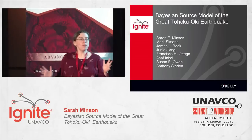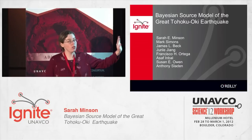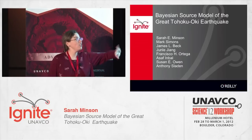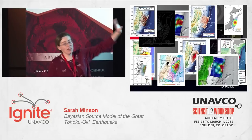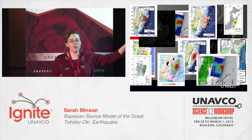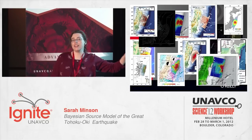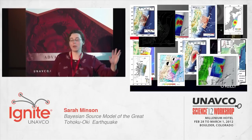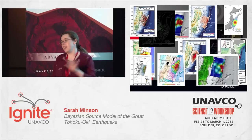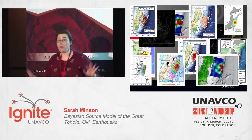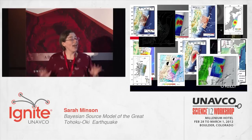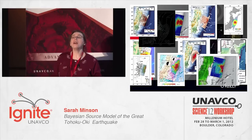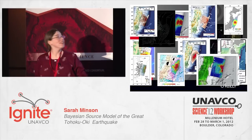There have already been a whole lot of slip models published for the Tohoku earthquake, and as you can see, they're all a little different. That's because this is a fundamentally underdetermined inverse problem — there is more than one model which fits the data. There's always going to be more than one model that fits the data, and I say to you: embrace this uncertainty.